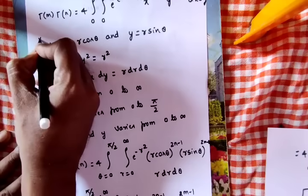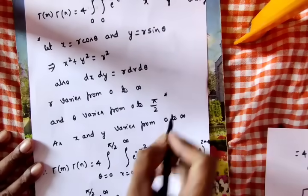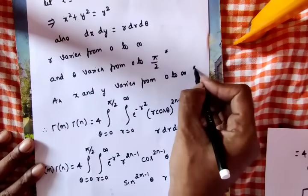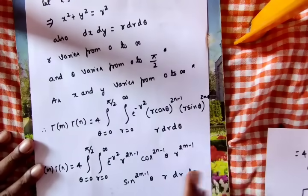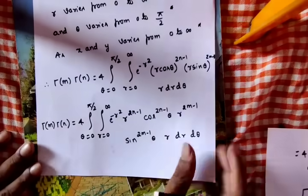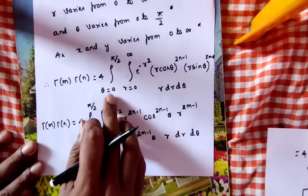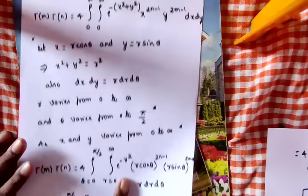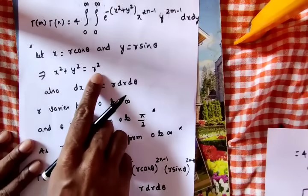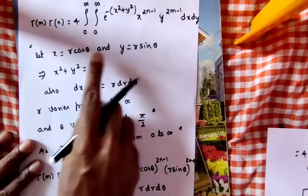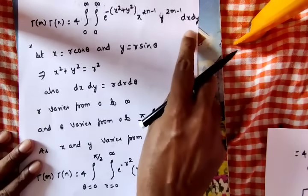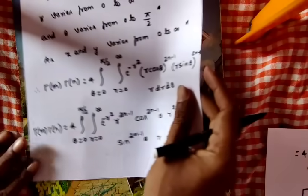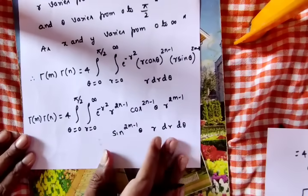As x and y vary from 0 to infinity, after substitution gamma(m) into gamma(n) becomes 4 times the integral with theta from 0 to pi/2 and r from 0 to infinity, with x squared plus y squared replaced by r squared, and dx dy replaced by r dr d(theta).